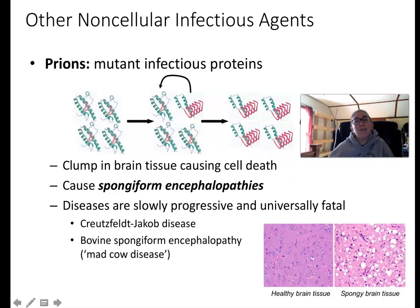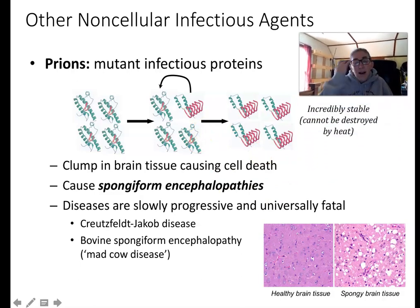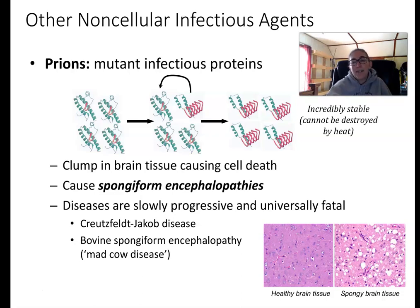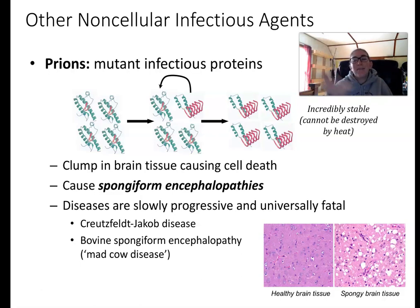One other type of infectious particle to mention alongside viruses is prions. Prions are their own category of infectious particle, discovered more recently than viruses. Unlike viruses, prions do not have any genetic material. A virus has at least genetic material (RNA or DNA) and a protein capsid — those are the minimum two parts.